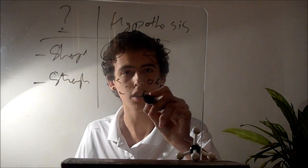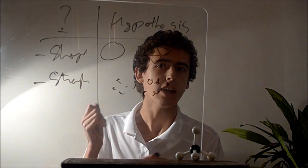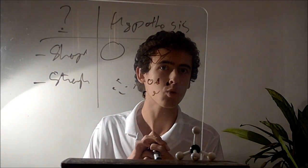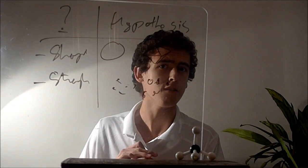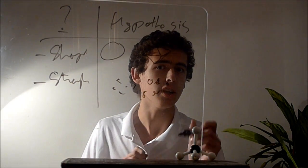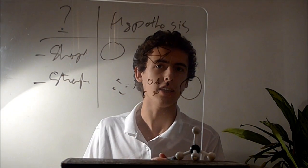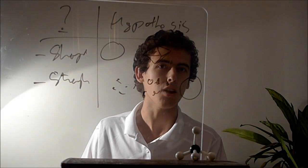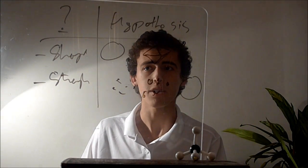If we get a lot of little sponges, we can deduce that the cells can attach to one another, but the strength isn't enough to create a big one. And if we get only one big sponge, we can think that the strength of the union is great and there is no problem with this.